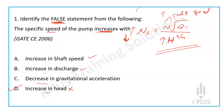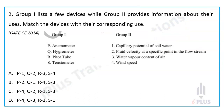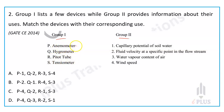Second question: Group 1 lists a few devices while Group 2 provides information about their uses. Match the devices with corresponding uses. Group 1: P — Anemometer, Q — Hygrometer, R — Pitot tube, S — Tensiometer.